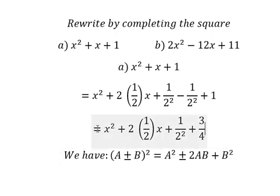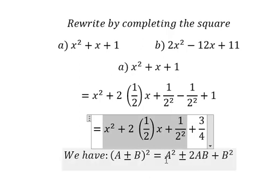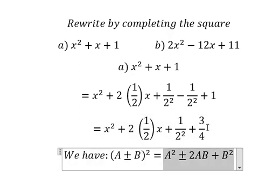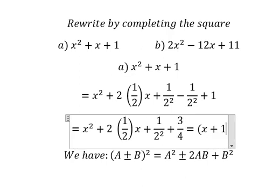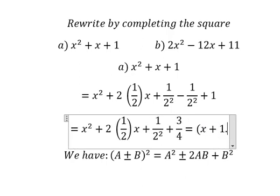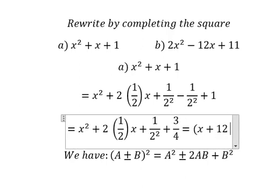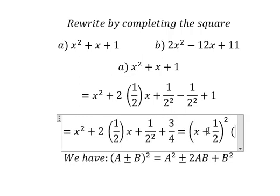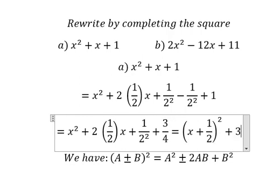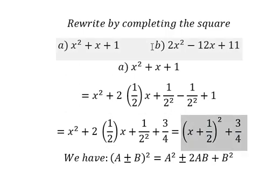Using the algebraic identity, we get (x + 1/2)² and we have 3/4. That is the answer for the first example. Now let's go to the next one.